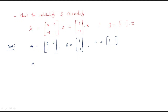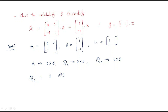To check controllability, we should find the controllable matrix QC. Since the rank of the system is 2×2, QC is a 2×2 matrix. To form it we need two things: B and AB. First, B is directly given, so we need to find AB.